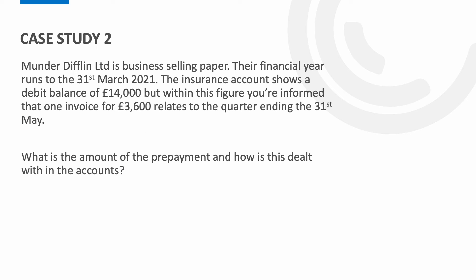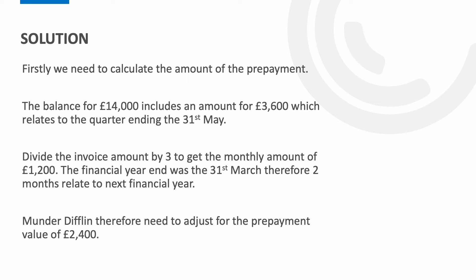Now let's look at case study two. Munda Diffling Limited is a business selling paper. Their financial year runs to the 31st of March 2021. The insurance account shows a debit balance of £14,000, but within this figure you're informed that one invoice for £3,600 relates to the quarter ending the 31st of May. We need to calculate the amount that has been prepaid. Dividing £3,600 by three gives us a monthly amount of £1,200. As two months relate to the next financial year, the business would therefore need to enter a prepayment value of £2,400.